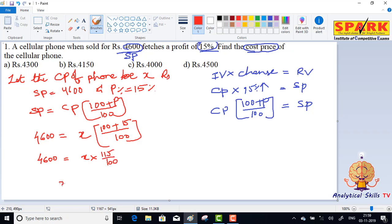So from this, x equals 4600 into 100 by 115. After cancellation, 100 becomes 20 times, 115 becomes 23 times, and 4600 becomes 200 times. So 200 into 20 is 4000. So 4000 is the cost price.